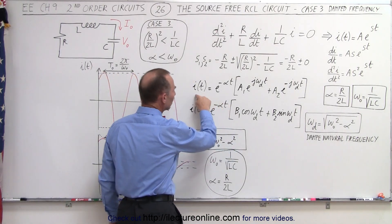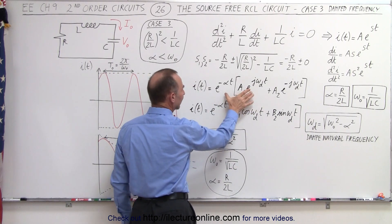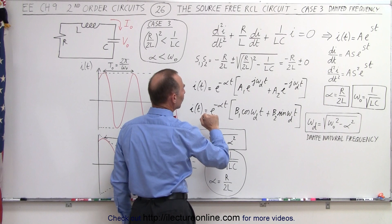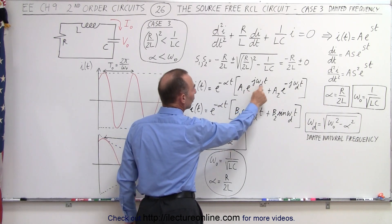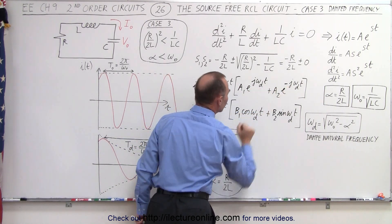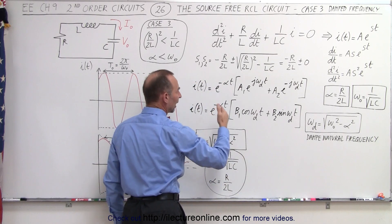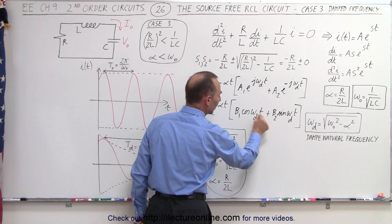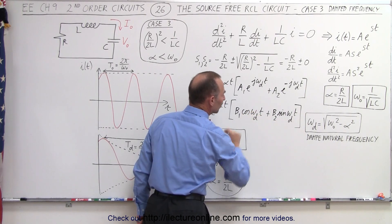We have repeated the general solution of case number 3, where we have an under-damped system. Notice that we have in the exponent the complex number j, and then we showed you on the last video how we can rewrite this in terms of a sum of cosine and sine functions of omega sub d t.